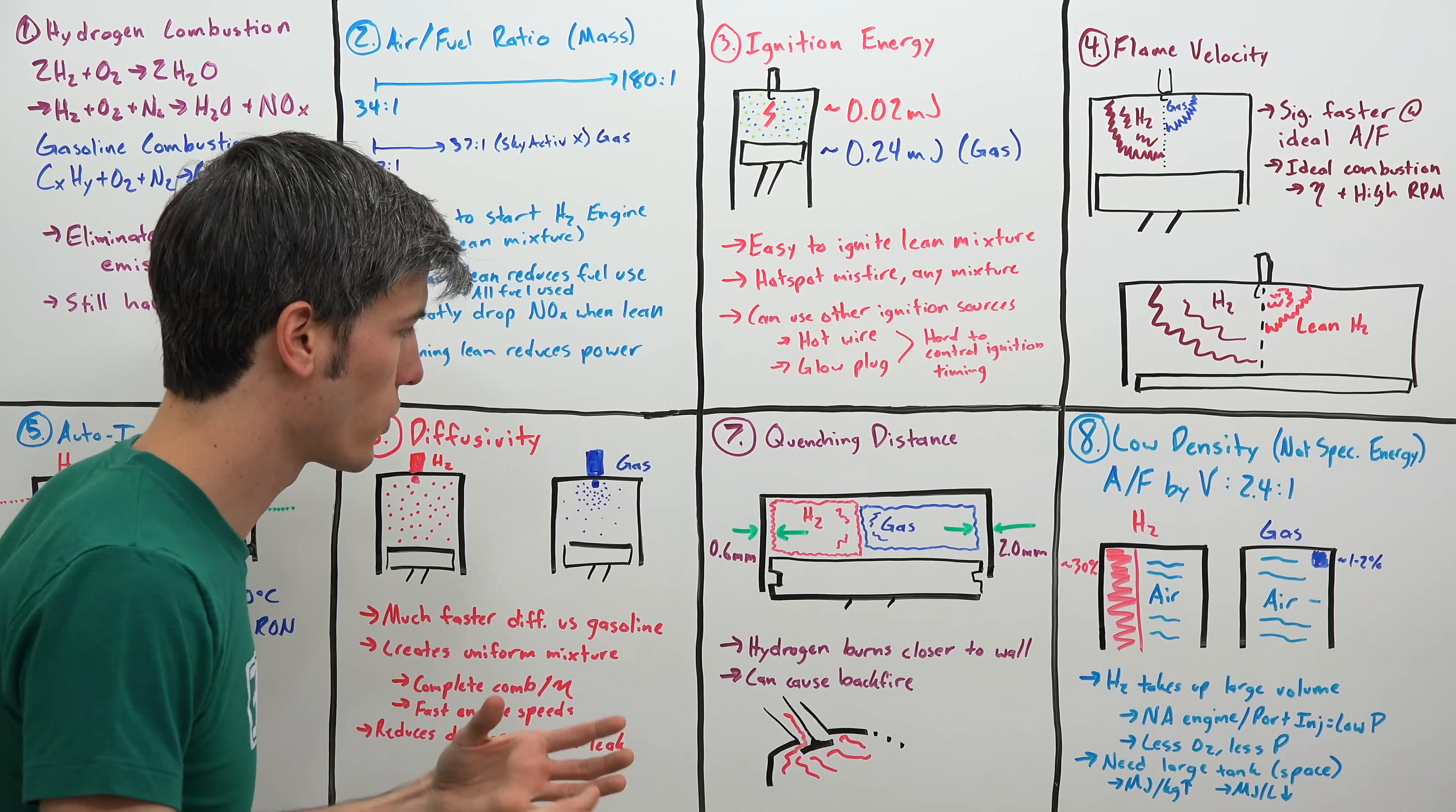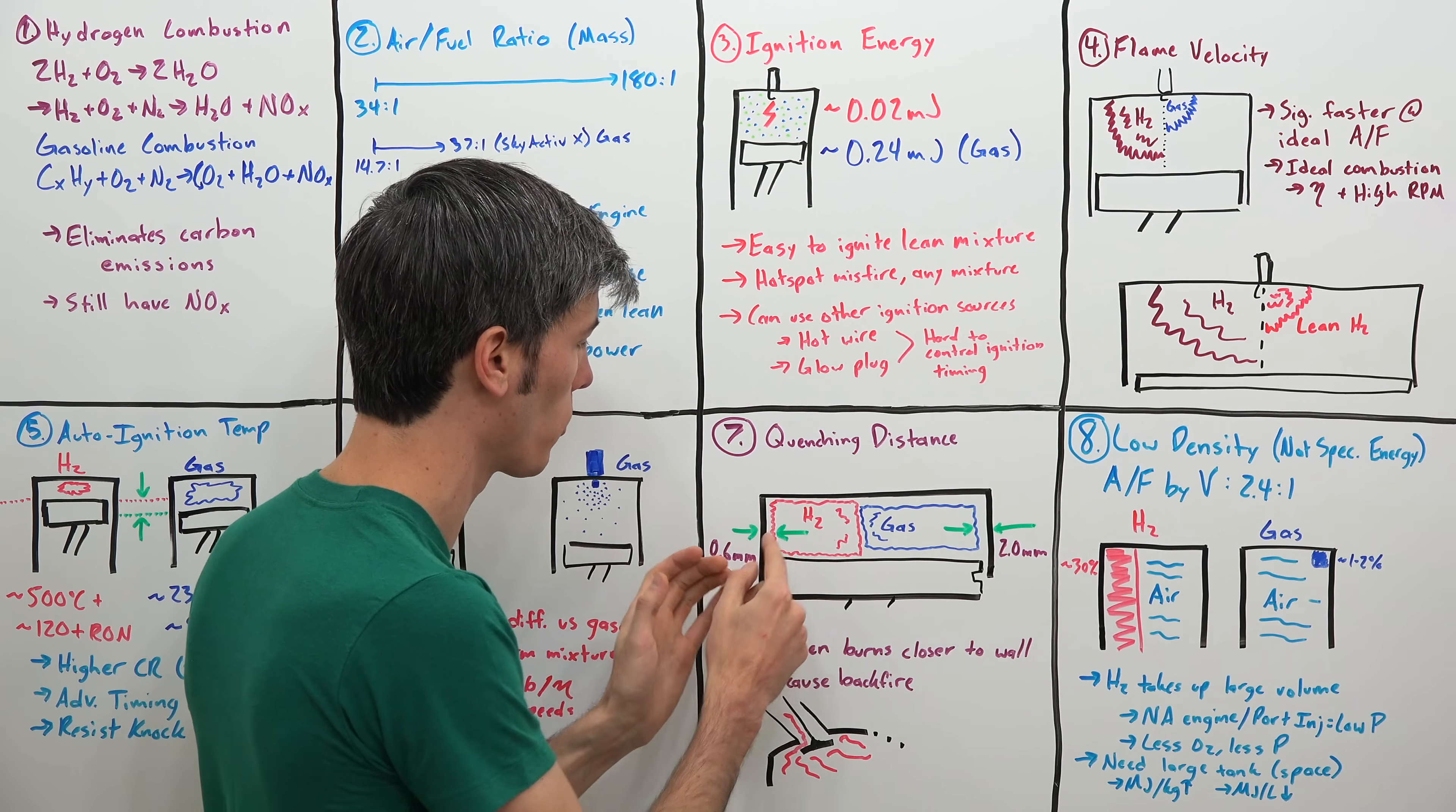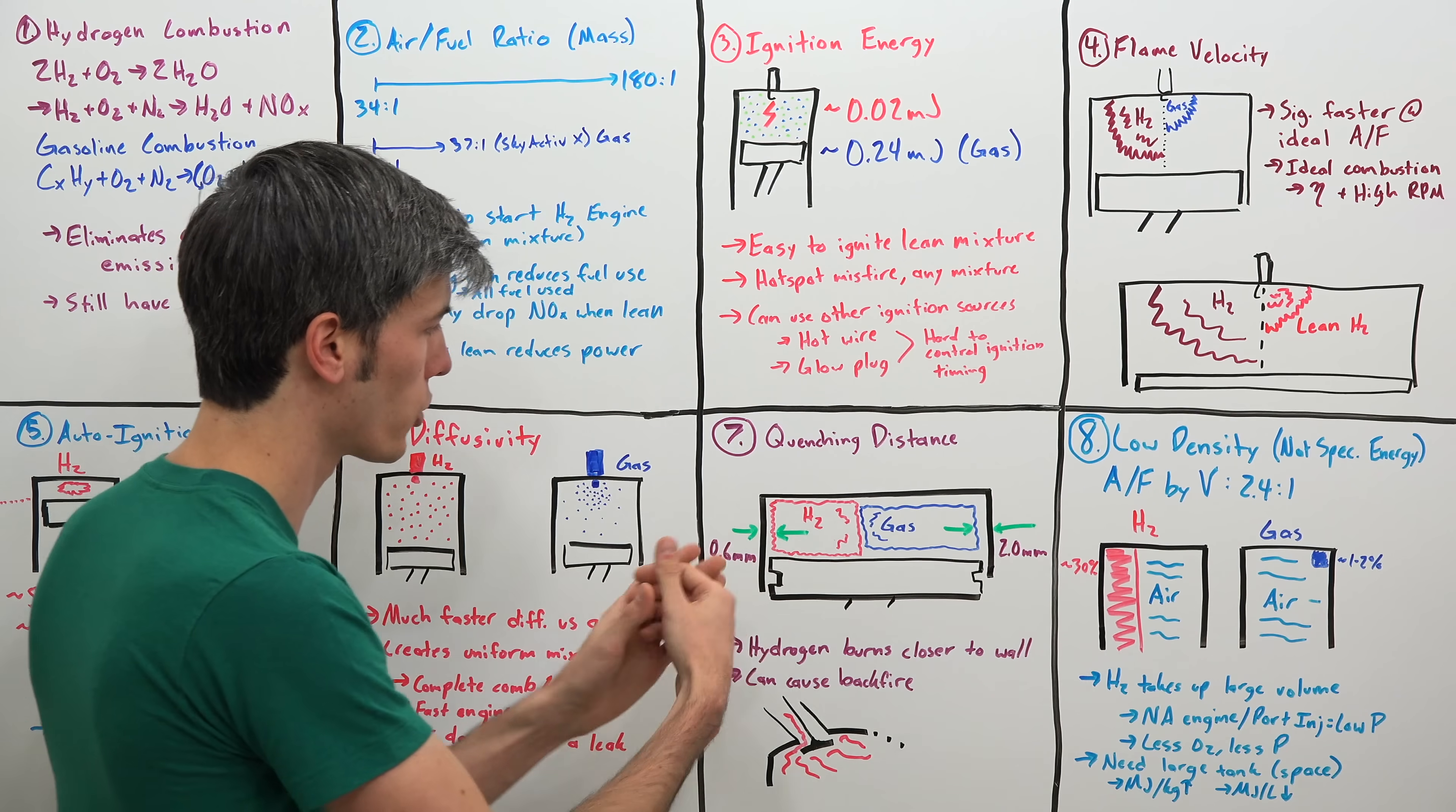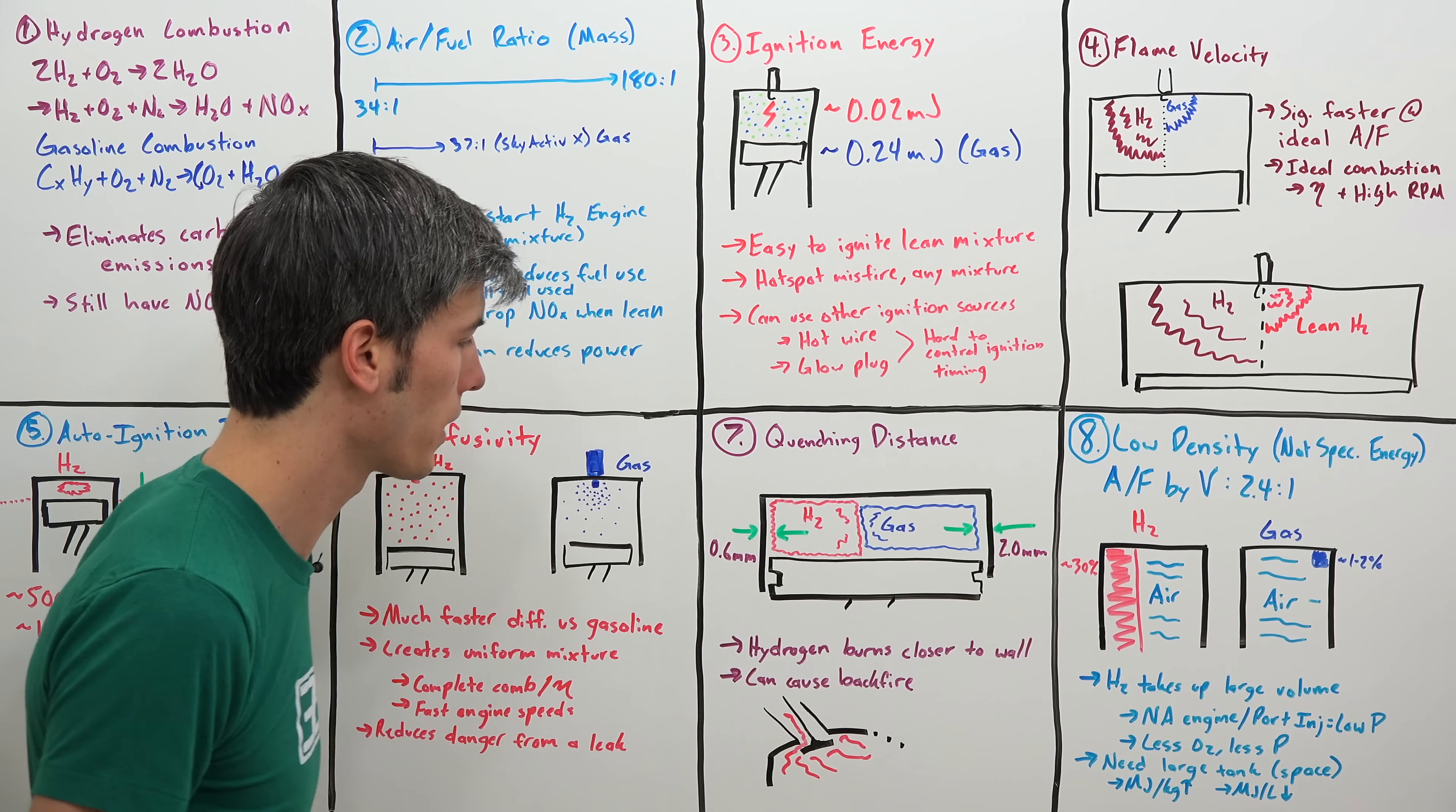Our next point is quenching distance. And the quenching distance is the distance between where you have that air fuel mixture igniting, where that flame extinguishes relative to where your wall is. So the distance from the wall at which your flame extinguishes. For hydrogen, this number is pretty low, just 0.6 millimeters. For gasoline, it's a bit longer of a distance, 2 millimeters. And so with hydrogen, you're going to have combustion occur all the way to that wall, a little bit closer to the wall. With gasoline, it's not going to get quite as close. So kind of the advantage there is that you're going to burn all of that air fuel mixture with the hydrogen.